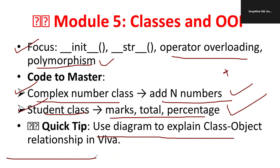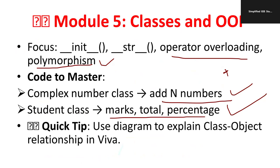For example, think of a Ganesha idol — the mold or shape is known as the class, and whatever Ganesha objects come out of it are called objects. Try to elaborate your answers in this way. These are simple but unavoidable topics — don't ignore these important topics.